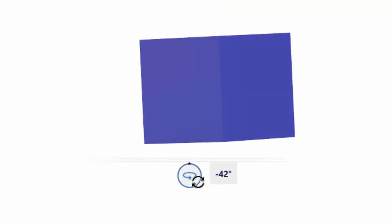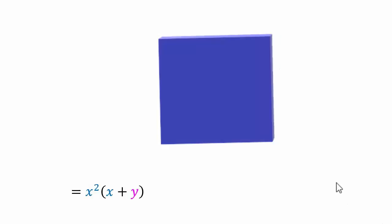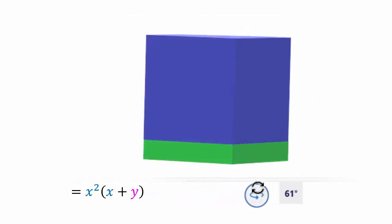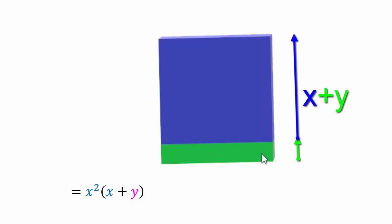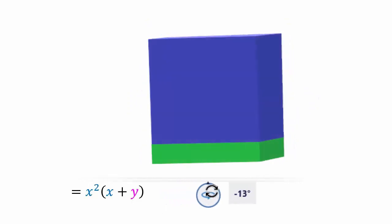Here we have x³ and you can see this is really just a cube from all directions. Now let's put a slice under it — we've made it y longer. Going around to show you: all we've done is extended our cube so it's x + y tall. You had x here and y here; it's still x wide and x in depth, so x² is the base and x + y is the height.